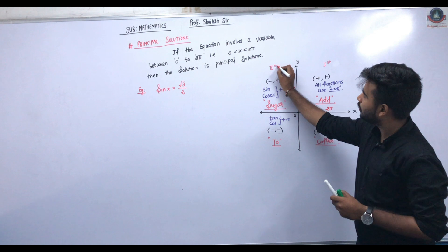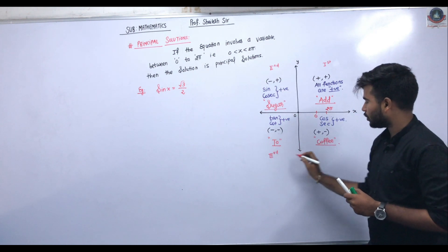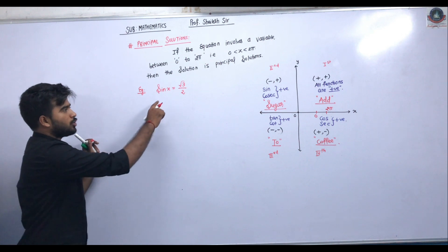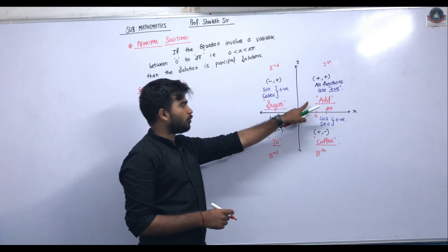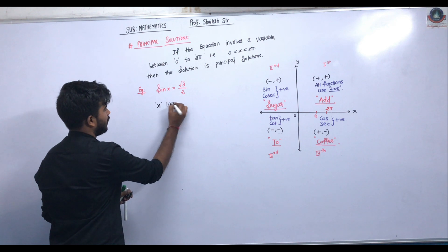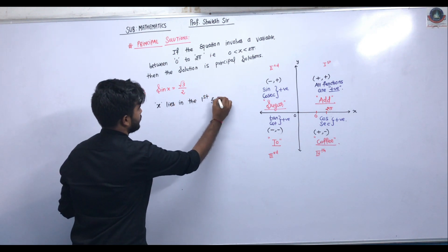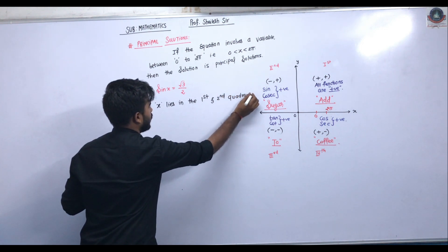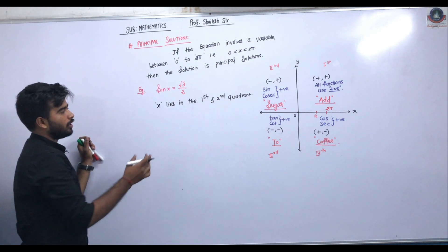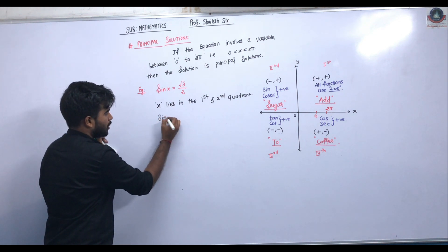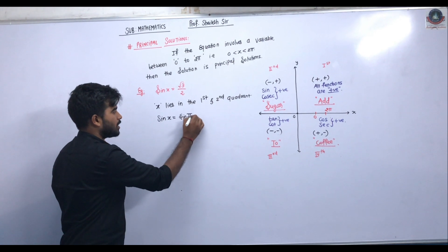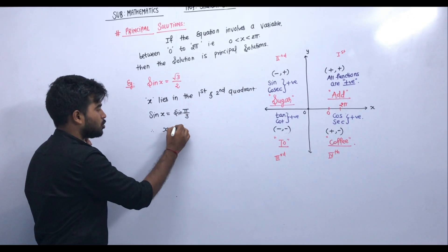There are four quadrants — first, second, third, and fourth. Sin x is positive in the first and second quadrants, and negative in the remaining two quadrants. Since sin is positive here, the angle lies in the first or second quadrant. We know that sin 60° = √3/2, and sin(π/3) = √3/2, so x = π/3.